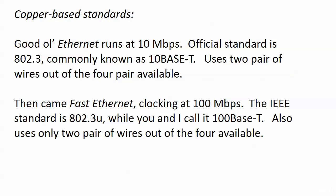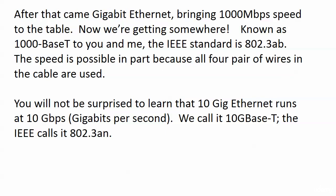Then came Fast Ethernet, clocking in at 100 Mbps — the IEEE standard is 802.3u, and we call it 100Base-T. It also uses only two wire pairs. Gigabit Ethernet uses all four pairs of wires, which is what allows it to reach 1000 Mbps. We call it 1000Base-T; the IEEE standard is 802.3ab. You certainly won't be surprised to learn that 10 Gig Ethernet runs at 10 Gbps. We call it 10GBase-T; the IEEE standard is 802.3an. Watch that G — it's easy to gloss over in an exam question.